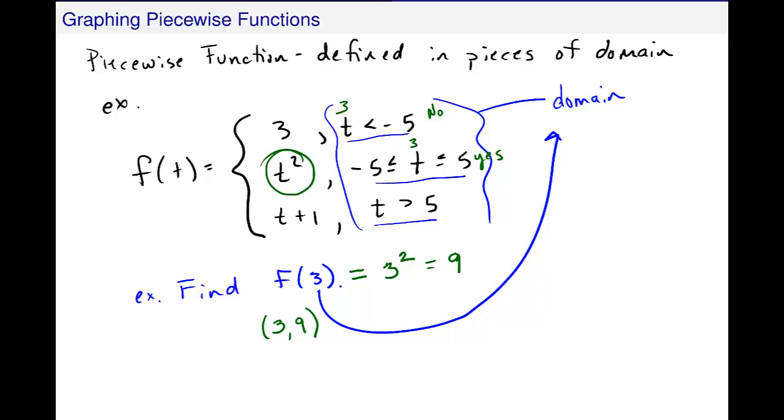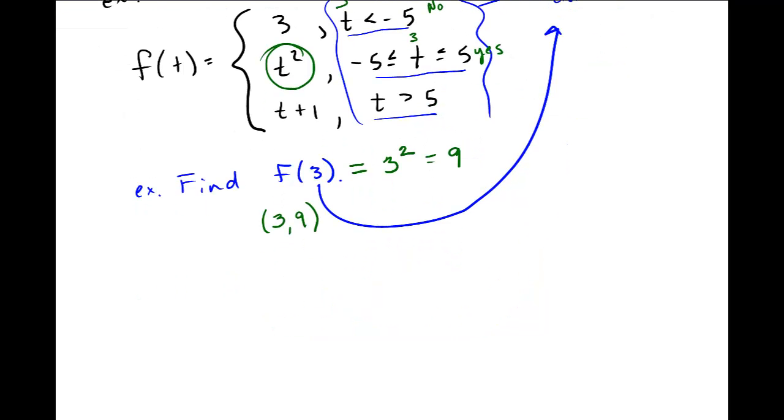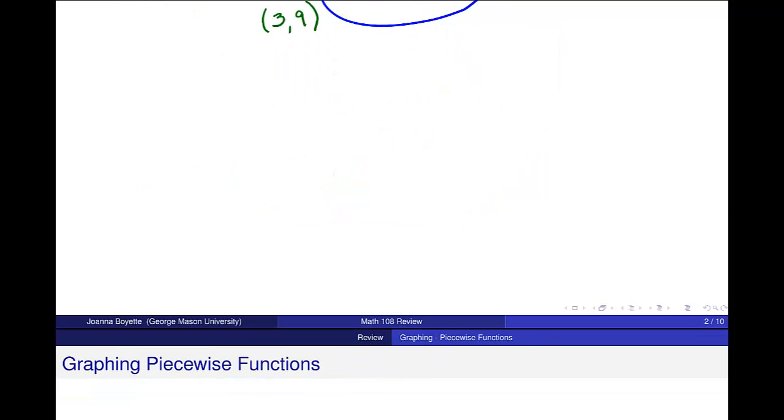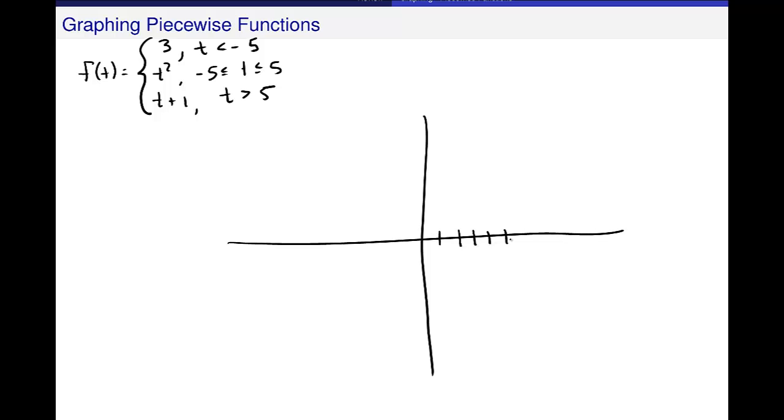Now when we start talking about graphing this thing, the graph also happens in pieces. I want to rewrite this problem down here. I'll rewrite the function since we kind of used this space. Maybe I'll try to write a little bit more compactly.